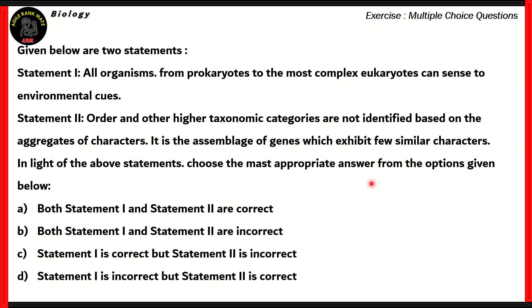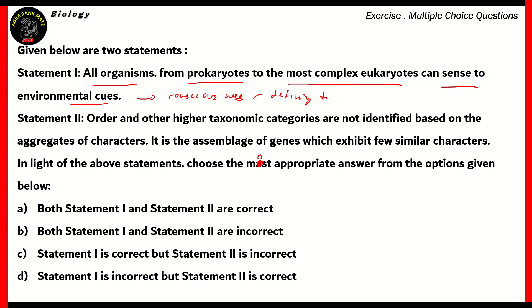Here's our first question. This one's from biology. There are two statements given, and we need to find out the most appropriate option. Statement one says: all organisms, from prokaryotes to the most complex eukaryotes, can sense environmental cues. Now, sensing environmental cues is what is called consciousness. Since it's a defining trait for living organisms, statement one turns out to be correct. Nonliving things do not express this — living things can sense the environment around them. So statement one is true.